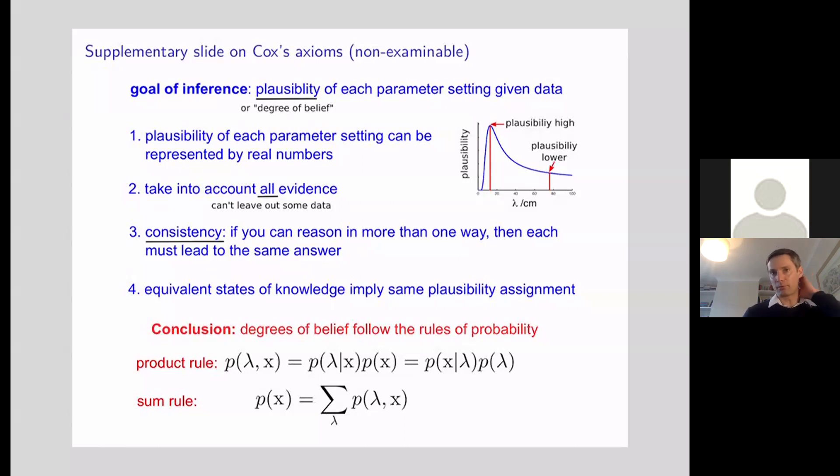This is completely non-examinable and not something that's going to turn up in the exam, but it's useful background knowledge to have. Essentially what I'll do is not talk through the proof itself, but talk through the axioms that Cox uses. Cox manipulates a set of reasonable sounding axioms in order to show that they can only be satisfied if you use the product rule and the sum rule.